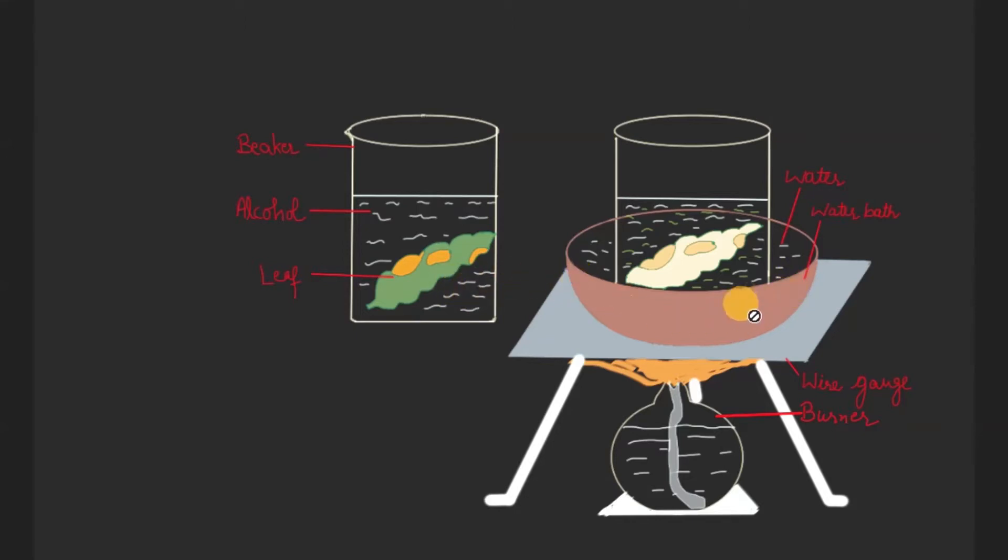We will take a water bath. We will fill water in this water bath and then we will place this beaker in it on the burner. This water bath will be heated up and then alcohol will also be heated up.